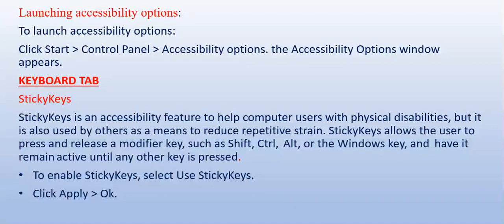The very first tab is the Keyboard tab. The first option in the Keyboard tab is Sticky Keys. Sticky Keys is an accessibility feature to help computer users with physical disabilities, and is also used as a means to reduce repetitive strain. It allows the user to press and release a modifier key such as Shift, Control, Alt, or the Windows key, and have it remain active until any other key is pressed. This feature is very helpful for people whose one hand is not working properly.